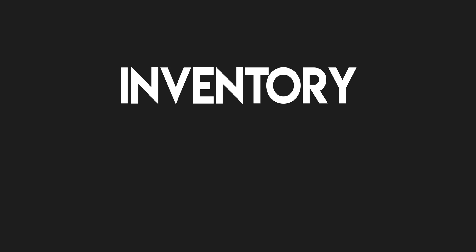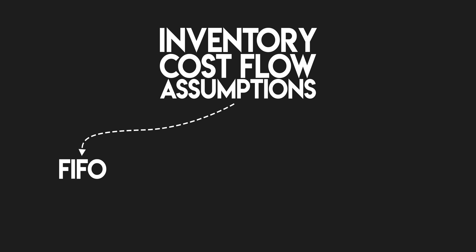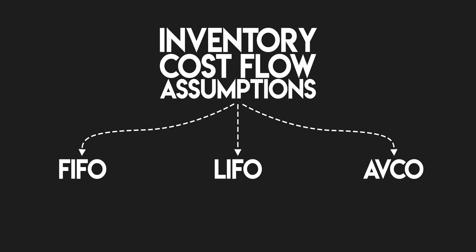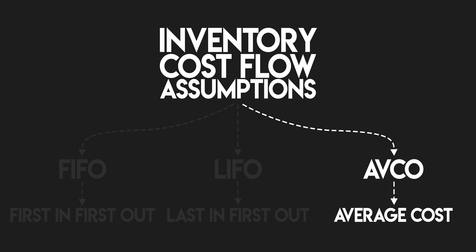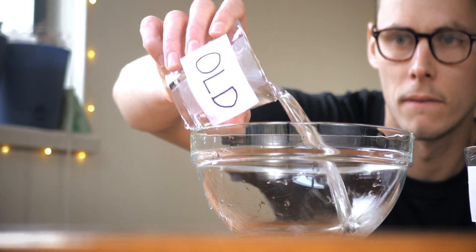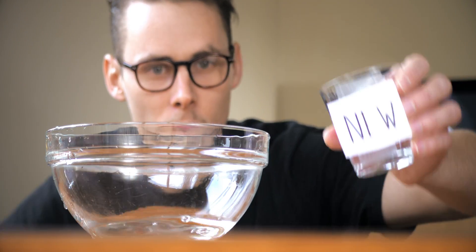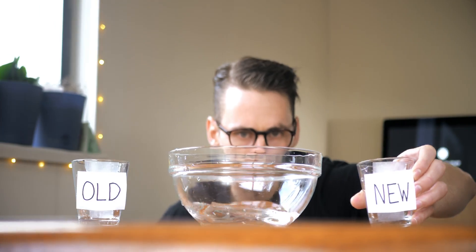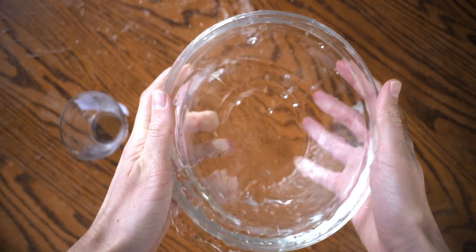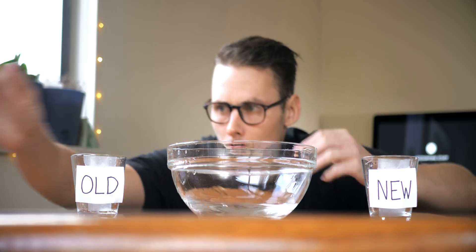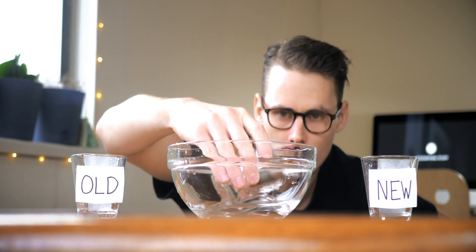There are three inventory cost flow assumptions: FIFO, LIFO, and AVCO — first in first out, last in first out, and the average cost or weighted average cost method. When you make a sale using AVCO, you assume that all of your goods available for sale are valued at their weighted average cost per unit. It doesn't matter what order you bought your inventory — you assume that it all gets mixed up together, whether or not that's the case in reality.